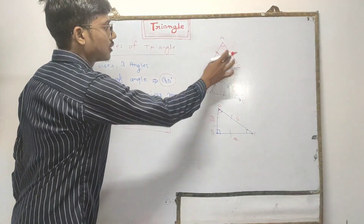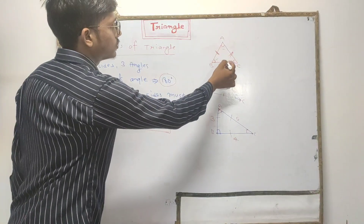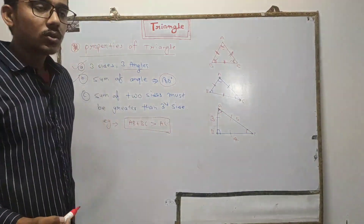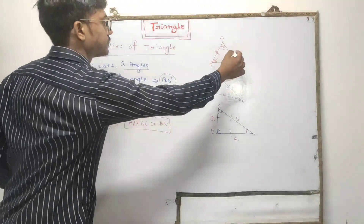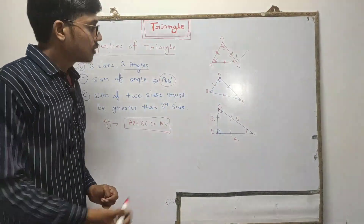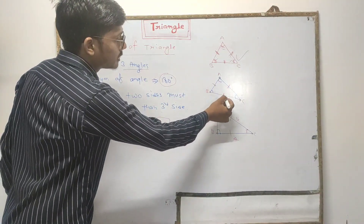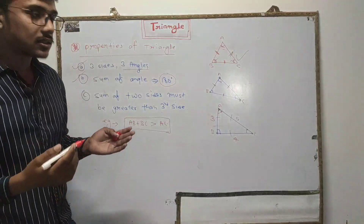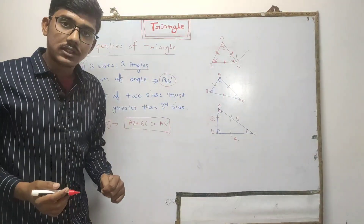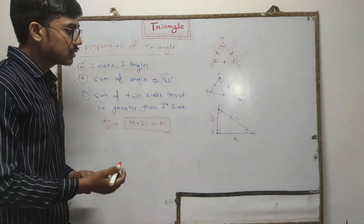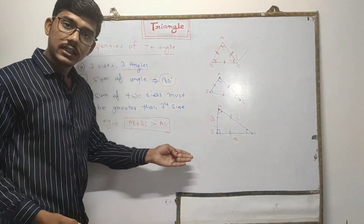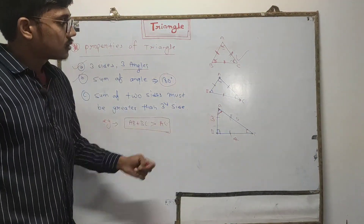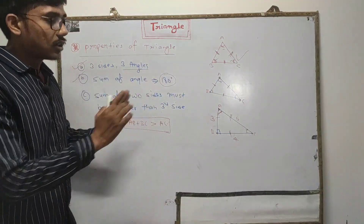Suppose I have a figure. In this figure there are three sides — one, two, three — and there are three angles: one, two, three. So I can say this is a triangle. In a second figure, we see three sides and three angles. So you can say that is also a triangle. In a third figure there are three sides and three angles, so that figure is also called a triangle. All of these figures are triangles.